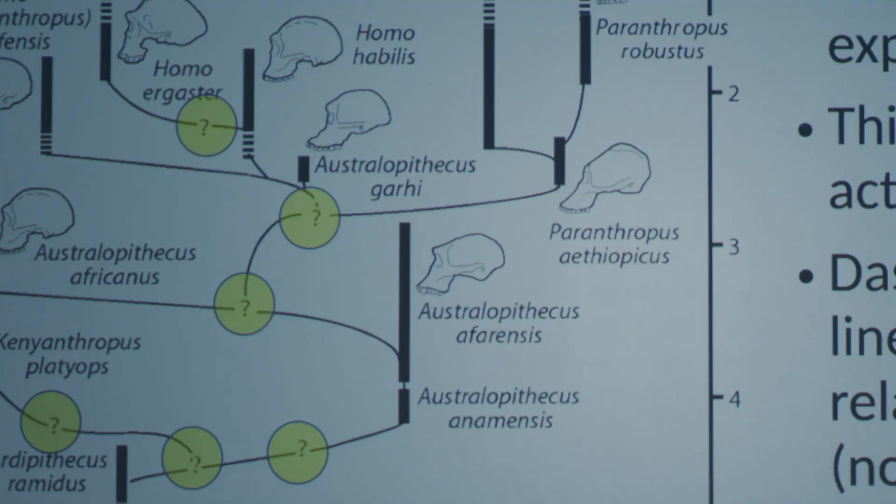They're all based on guesswork? Yes. Only the thick vertical bars show the actual fossil evidence that was discovered. Sir, there is no fossil evidence connecting Arti to Afarensis, none connecting Afarensis to Habilis, none connecting Habilis to Ergaster or Erectus, and no fossil evidence whatsoever connecting them to Homo sapiens in any intermediate form.